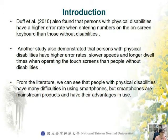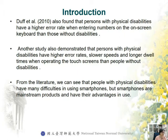Another study also demonstrated that persons with a physical disability have a higher error rate, slower speed, and longer delay time when operating the touch screen than people without a disability. From the literature, we can see that people with a physical disability have many difficulties in using smartphones, but smartphones are mainstream products and have their advantages in use.